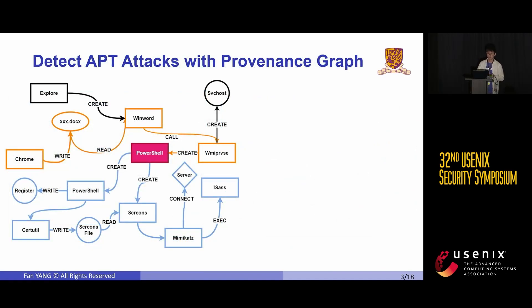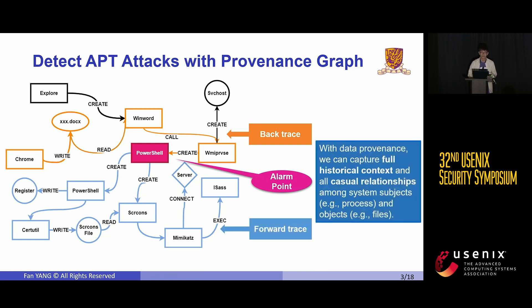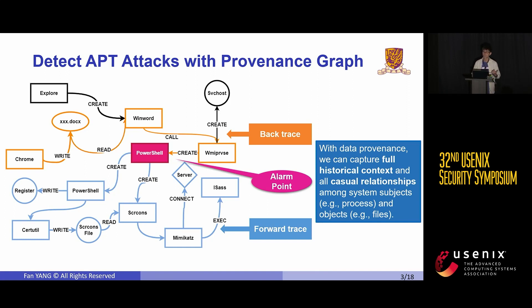To tackle the problem of APT detection, recent research has highlighted the significance of data provenance, which involves parsing system events into causal relationship graphs, providing a comprehensive context of system execution. This graph enables defenders to understand the interrelationships among system entities, allowing for root cause identification from an alert point and exploring subsequent actions. In summary, data provenance could capture full historical context and causal relationships among system subjects and objects, providing valuable insight into attack points and traces.